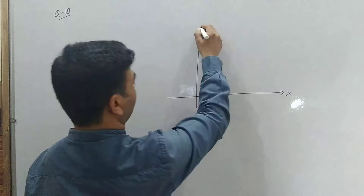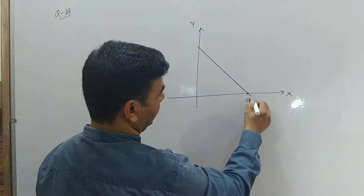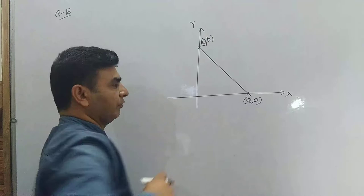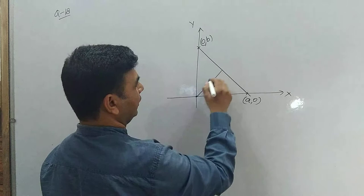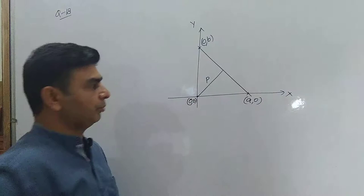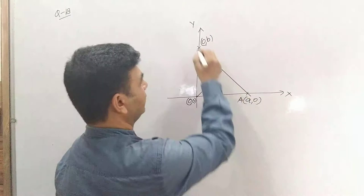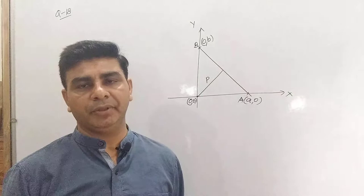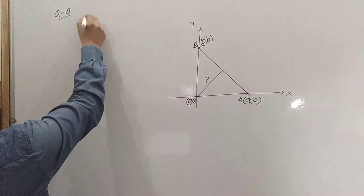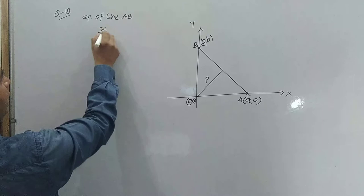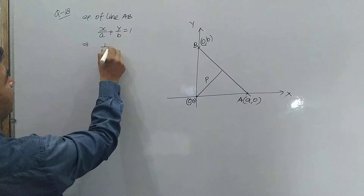P is the length of perpendicular from the origin to a line. The line intersects the x-axis at point (a, 0) and the y-axis at point (0, b). A perpendicular is drawn from the origin to this line with length p. We need to show that 1/p² = 1/a² + 1/b². The equation of line AB in intercept form is x/a + y/b = 1.